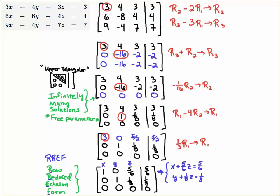Now if I just read off this top row here, I see that x, there's a 0y here and then I have a 5/6 z is equal to 5/6. So in other words, I have x plus 5/6 z is equal to 5/6.